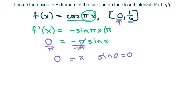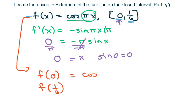So we're going to go back to our original function here, and plug in f of zero, and f of one-sixth. So f of zero is going to be cosine of zero, and cosine of zero equals one. So our point is zero comma one.